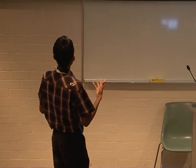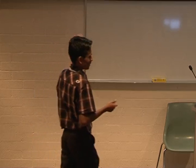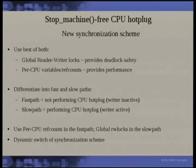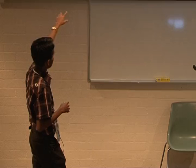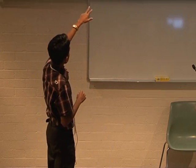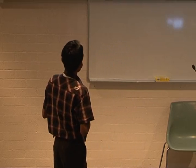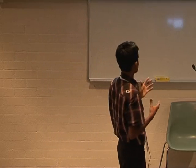The solution is a new synchronization scheme using the best of both: global reader-writer locks provide deadlock safety but lack hot-path performance; per-CPU ref counts provide performance. The design differentiates hotplug into two paths. Fast path — when not doing hotplug — uses per-CPU ref counts to track nesting depth of read-side critical sections. Slow path — when actually doing hotplug — uses global reader-writer locks, which avoids circular locking. When a hotplug operation starts, there is a dynamic synchronization switch between the two paths.